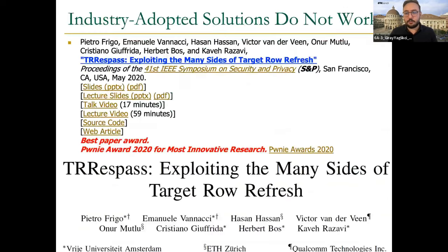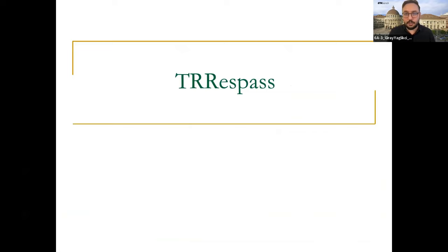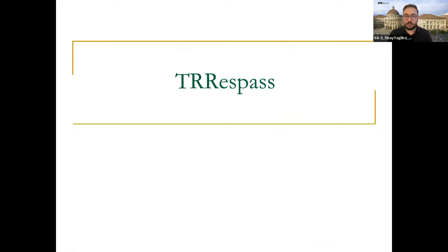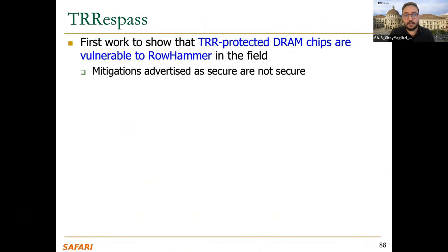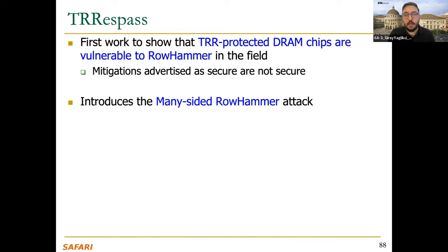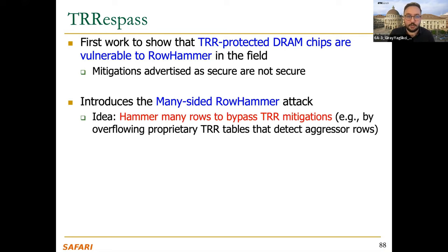After rowhammer was published in 2014, some DRAM manufacturers claimed they had solved rowhammer internally without open-sourcing their solution. In the work called TRResspass, published at IEEE S&P 2020, we investigated whether those DRAM chips are actually safe. It is the first work to show that DRAM chips with Target Row Refresh (TRR) protection are still vulnerable to rowhammer in the field — advertised mitigations are not secure — and it introduces a new attack pattern that circumvents these solutions.